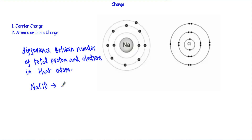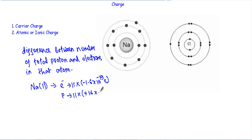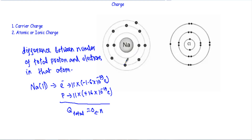Consider the sodium structure. Sodium has an atomic number of 11, meaning it has 11 electrons and 11 protons. The 11 electrons have a charge of 11 × (−1.6 × 10⁻¹⁹) Coulombs, and the 11 protons have a charge of 11 × (+1.6 × 10⁻¹⁹) Coulombs. Since the total positive and negative charges are equal, the total charge Q = 0, so sodium is initially charge neutral.